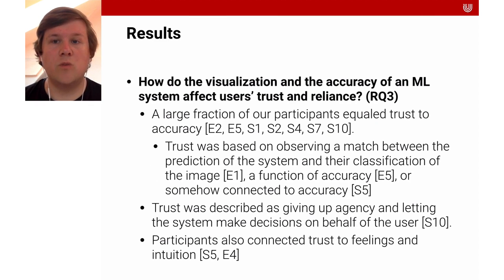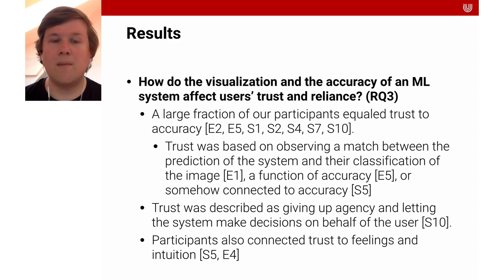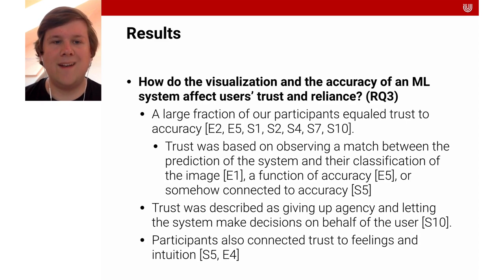The third research question was how do the visualization and the accuracy of a machine learning system affect users' trust and reliance. We found that a large fraction of participants equated trust to accuracy — trust was based on observing a match between the system's prediction and their own classification of the image, or was somehow connected to accuracy. Trust was described as giving up agency and letting the system make decisions on behalf of the user. Participants also connected trust to feelings and intuition.